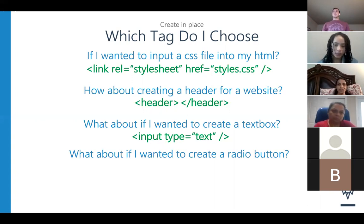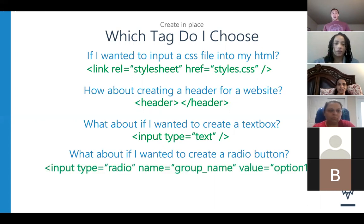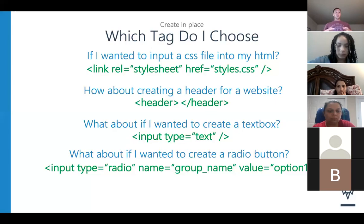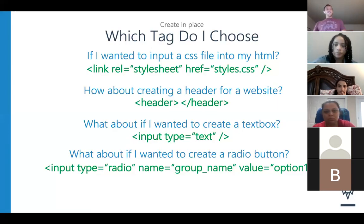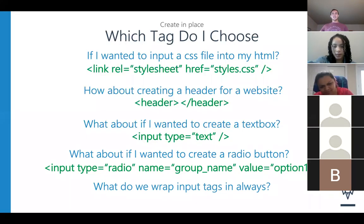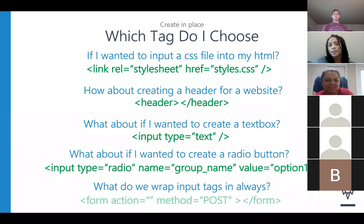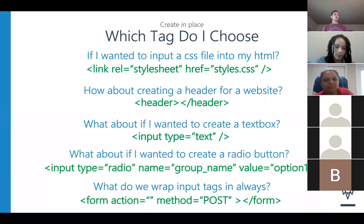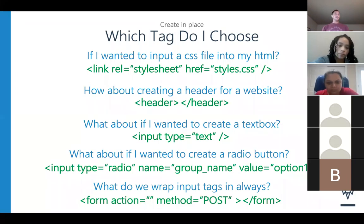Our type would be radio, but remember with radio buttons we need a few more attributes — specifically the name and the value attribute. When you're using radio buttons, the name is for your group name, and the value is unique to each option: option one, option two, option three, etc. Finally, what would we wrap all these input tags in? Labels is how we could label them, but we're looking for one more thing. A form tag — yes, absolutely. We need to wrap it in the form tags. This is how we submit something to our APIs, to our servers, using those methods, GET or POST.